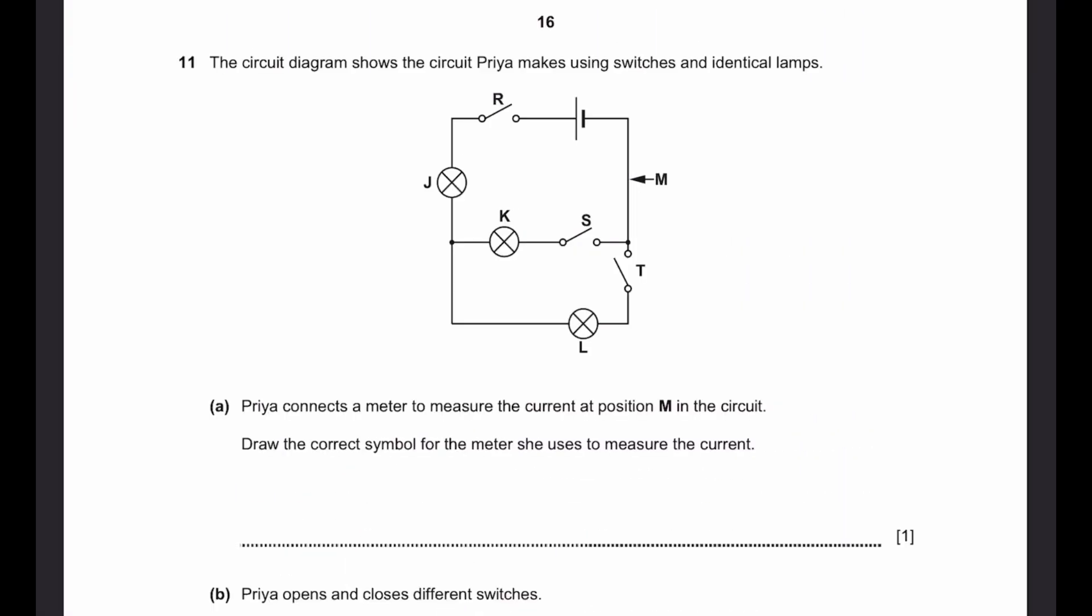Question 11. The circuit diagram shows the circuit Priya makes using switches and identical lamps. Priya connects a meter to measure the current at position M in the circuit. Draw the correct symbol for the meter she uses to measure the current. Current is measured in amps, or unit A, and amps are measured using an ammeter. So we can write that this is an ammeter, and the symbol is of course a circle with an A on it, and don't forget the wires which pass through it.